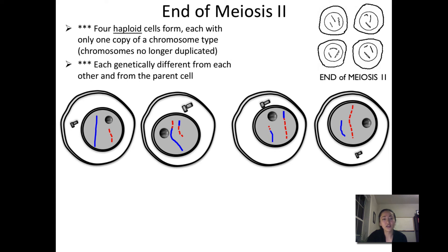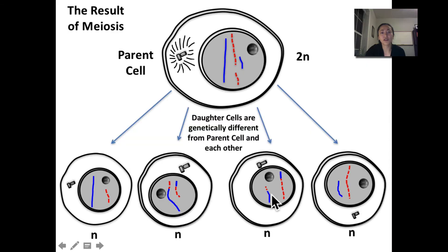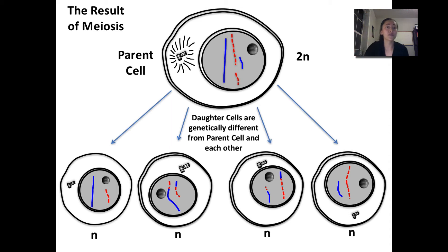Notice that each of the four resulting cells is genetically different from the others and from the original cell. This is how we create genetic variation — why all your offspring look different and why no two individuals look exactly alike.